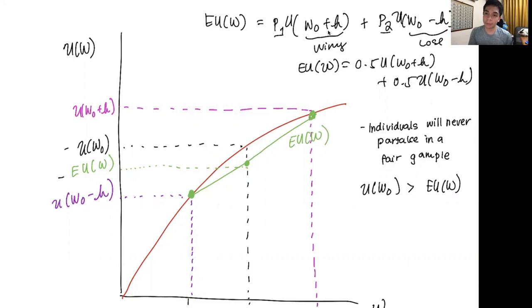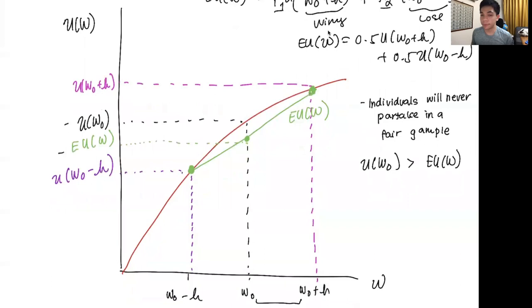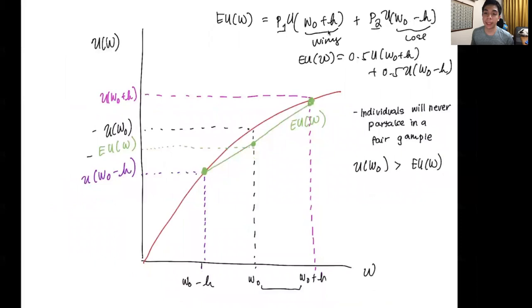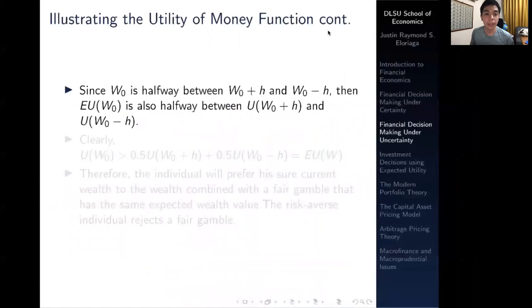Before we get to that concept, let's review what we tackled in the last video. In the last video we derived this graph here and showed how to derive this expected utility function, how it looks like graphically, and we came up with a couple of conclusions which we'll review.